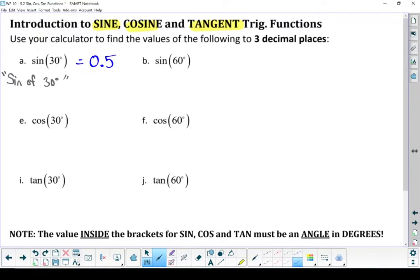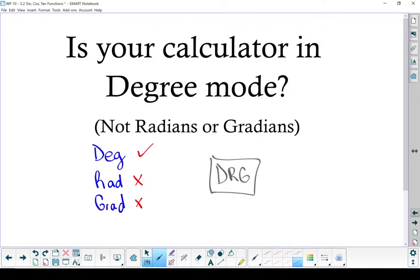Got a number other than 0.5? Is your calculator in degree mode? If it's not in degree mode, you need to change it. And that's why you're getting something other than 0.5.